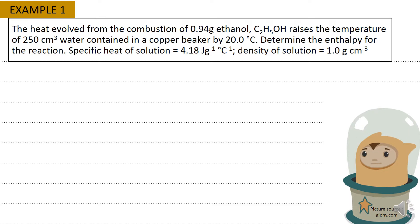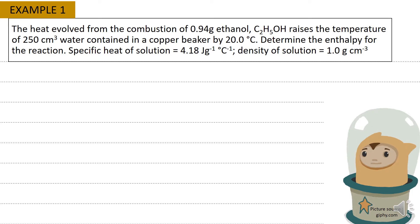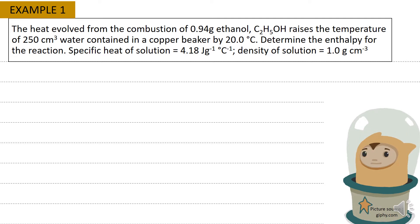Example 1: The heat evolved from the combustion of 0.94 gram ethanol (C2H5OH) raises the temperature of 250 cm³ of water contained in a copper beaker by 20 degrees C. Find the enthalpy of the reaction, given the specific heat of the solution is 4.18 joule per gram degree C, and the density of the solution is 1 gram per cm³.